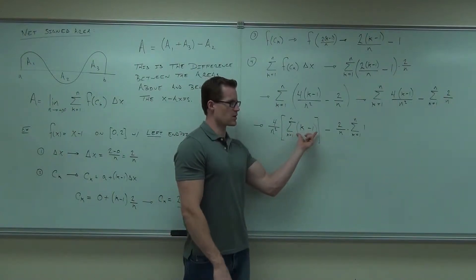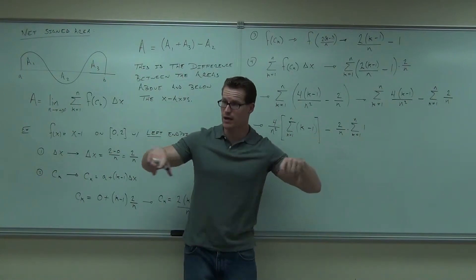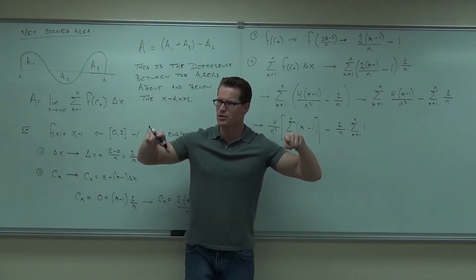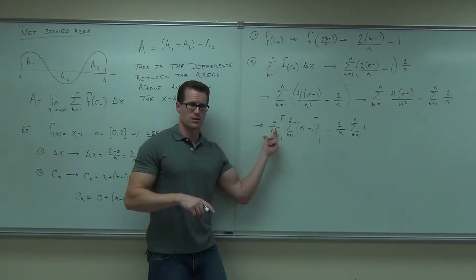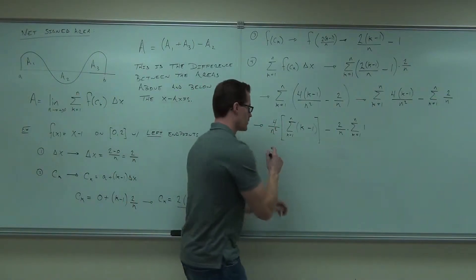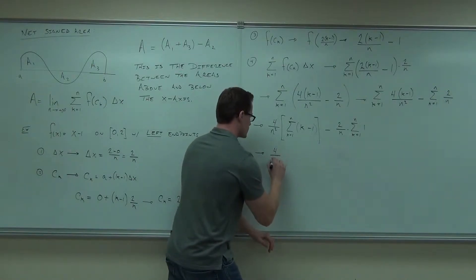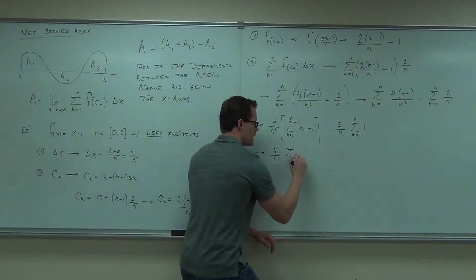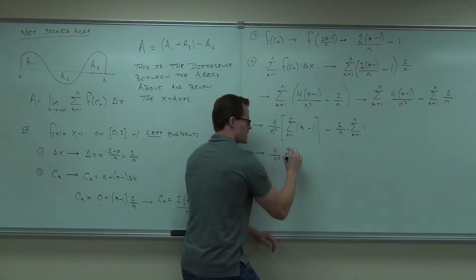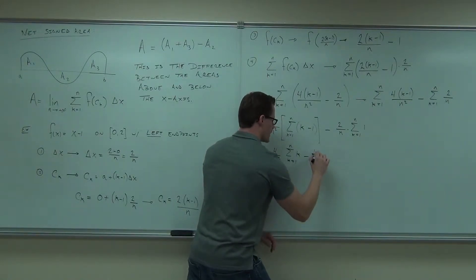This is not something you can deal with right here, but if you split that up, notice how we're going to keep it inside the bracket. Do you see why we're going to keep it inside the bracket? Because ultimately our answer is going to get multiplied by 4 over n squared. So we're going to have the summation of k — k is going from 1 to n — minus the summation of 1 from 1 to n.